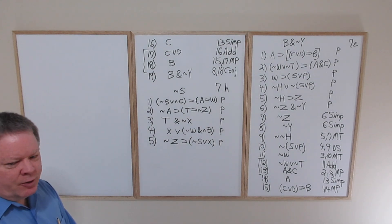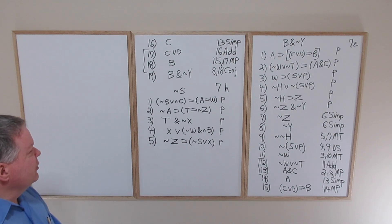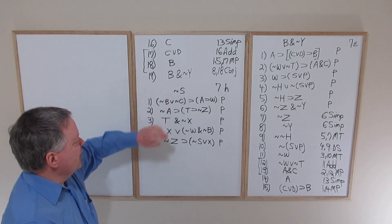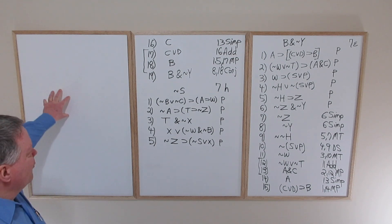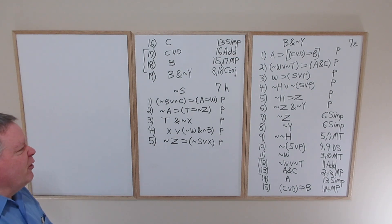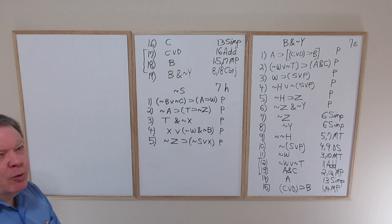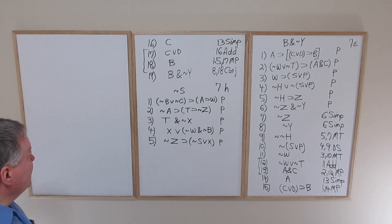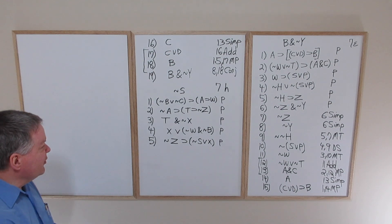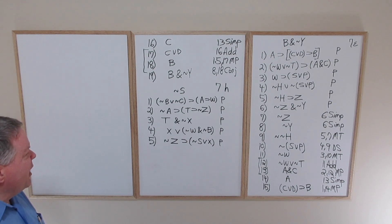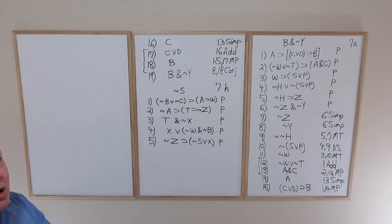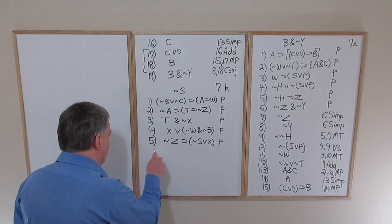Now we'll consider question 7h. We've got five premises this time and we want to end up with the sentence tilde S. Hopefully you can remember the five rules you set up for: modus ponens, modus tollens, hypothetical syllogism, disjunctive syllogism, and CD. There are no opportunities to employ any of those rules directly. In line three we've got a conjunction, so that's where we start.